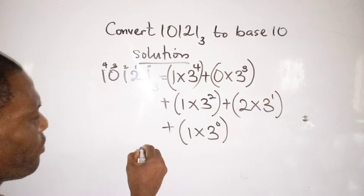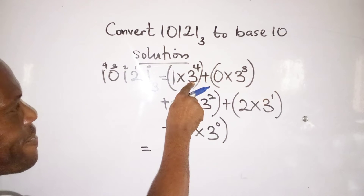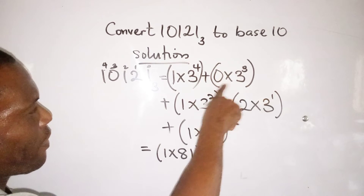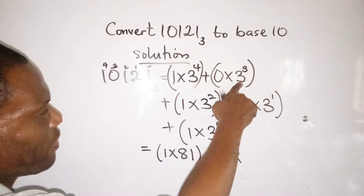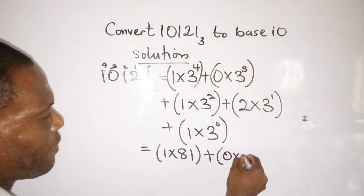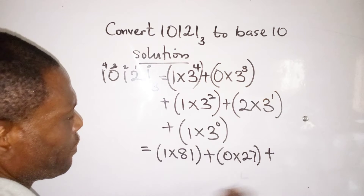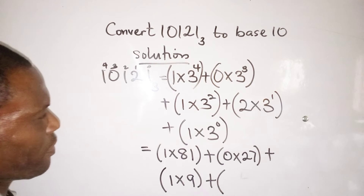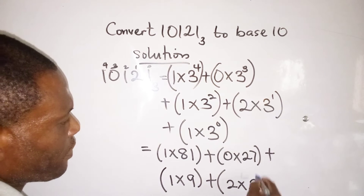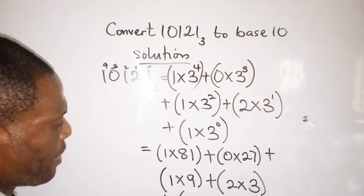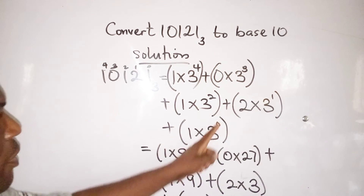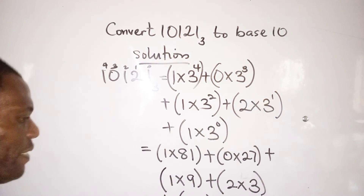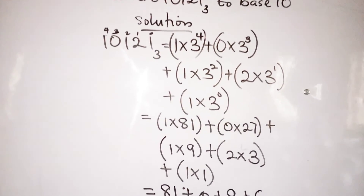So we begin to solve: 3 raised to the power of 4 gives us 81, plus 0 times 3 raised to the power of 3 is 0, plus 1 times 3 raised to the power of 2 is 9, plus 2 times 3 is 6, plus 1 times 1 is 1. This gives the result in base 10.